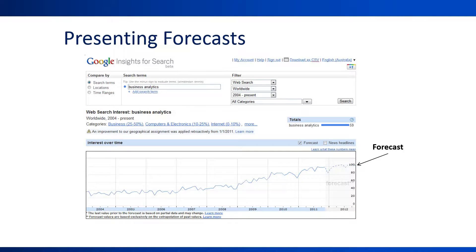As an example, consider this presentation of forecasts by Google's Insights for Search. This is no longer available, but similar Google products provide similar charts. The chart displays the volume of search for the keyword 'business analytics' between years 2004 and 2011. We can easily see that year 2012 is the forecast period — forecasts are denoted by a broken line and the background is darker. However, there are a few missing details that we would tend to include when presenting our forecasts to stakeholders.